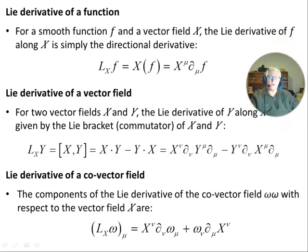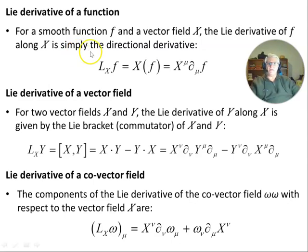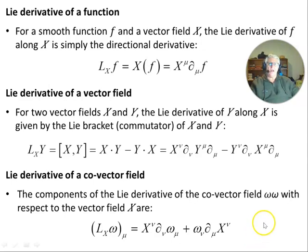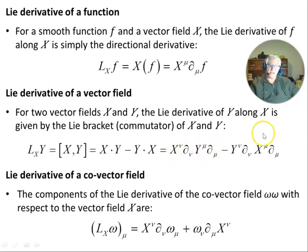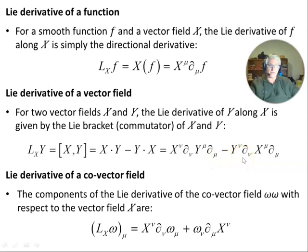Now I'm going to state the process for finding the Lie derivative for different objects: starting with a scalar, then a vector, then a one-form, and then going on to a tensor. The calculations to verify that these formulas hold is the subject of the video that follows this one in the playlist, which goes through the calculations to show how the pullback definition leads to these results.